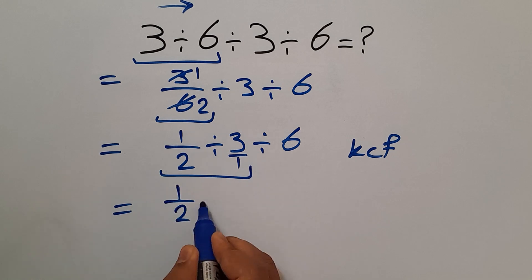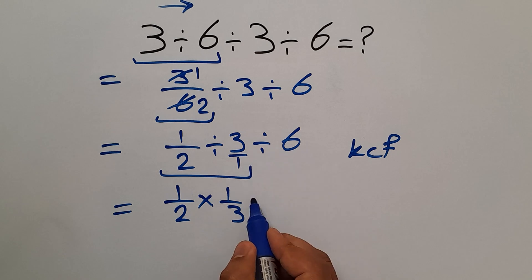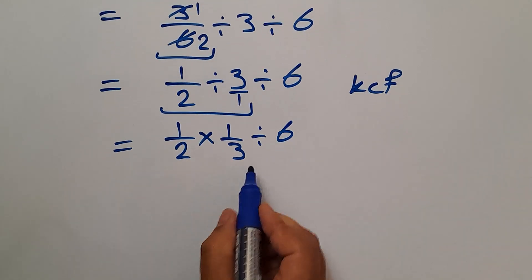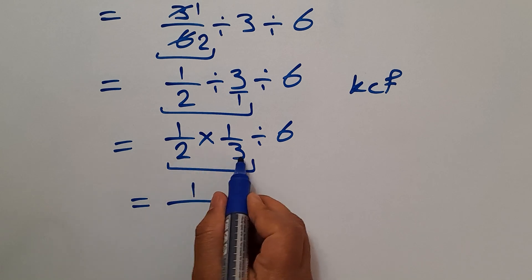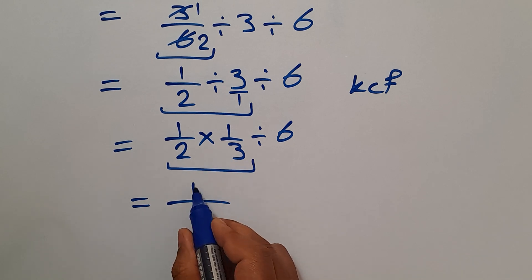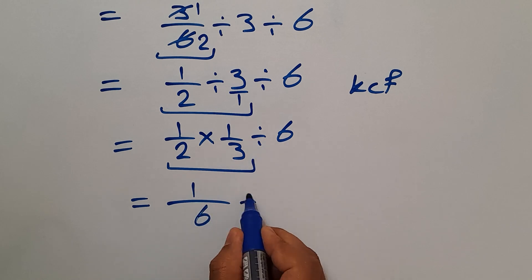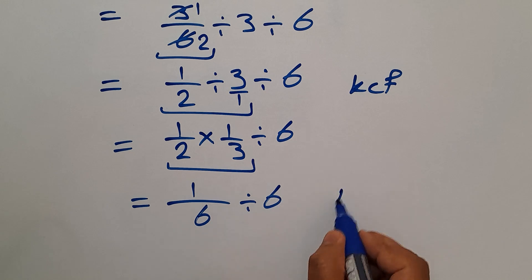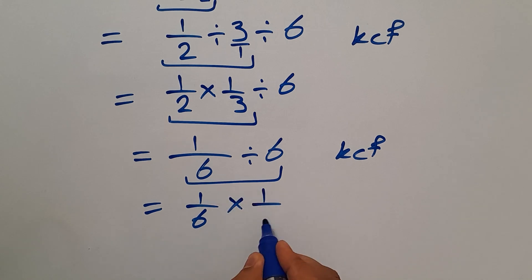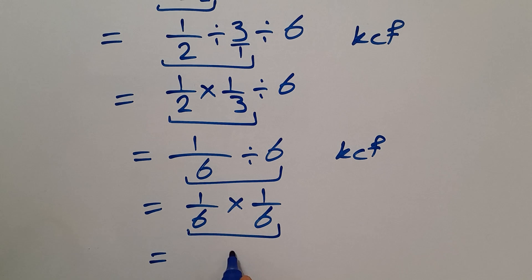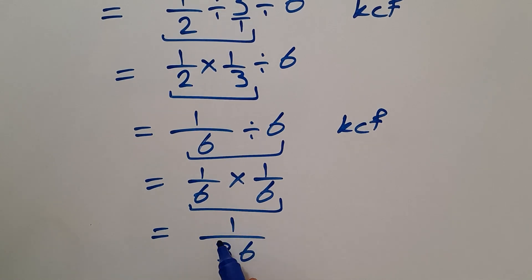So 1 over 2 divided by 3 over 1 can be written as 1 over 2 times 1 over 3, and let's recopy this divided by 6. So 1 over 2 times 1 over 3 equals 1 over 6. Now applying the KCF rule again, 1 over 6 divided by 6 equals 1 over 36. So our final answer to this problem is 1 over 36.